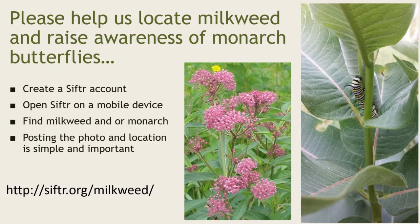Here's what I'd like you to help us out with. I'd like you to create a Sifter account. You can do it on a desktop or on a mobile device — doesn't matter, just create an account. It's a very simple thing to do. Open Sifter on a mobile device. Find milkweed, or monarchs, or monarch larvae — the caterpillars. Take pictures and post the photo and the location. It's pretty simple and straightforward to do, and yet it is oh so important. And it would mean a lot to my kids.